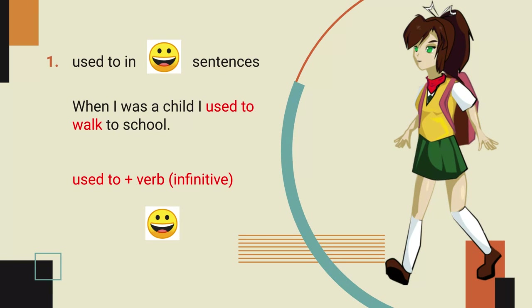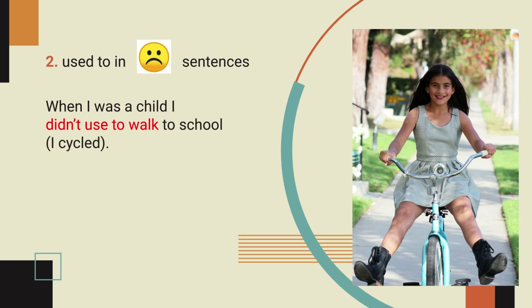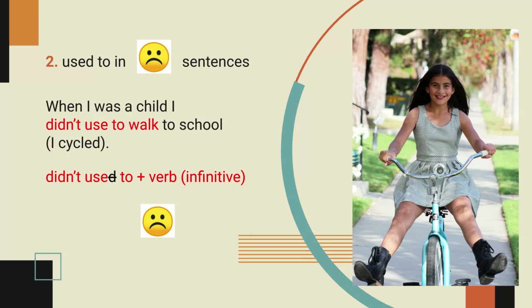What is infinitive? Do you remember? Hele werkwoord. Well done. Now, negative: 'When I was a child, I didn't use to walk to school.' What is the structure? Didn't use to — but notice, no D on 'use'. Didn't use to, plus verb infinitive — hele werkwoord. Well done.